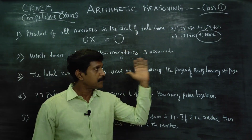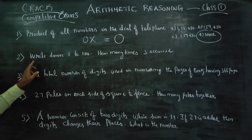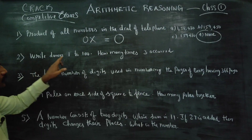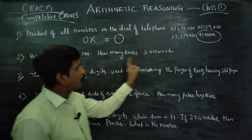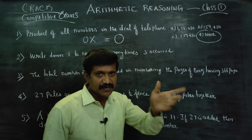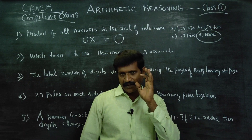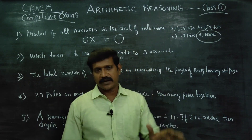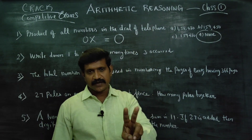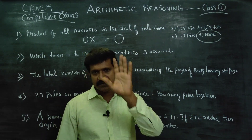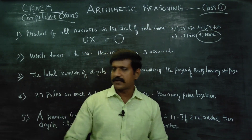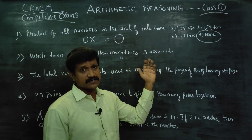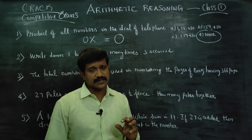Coming to the second sum: write down 1 to 100 — how many times does 3 occur? 3, 4, 5, 6, 7, 8, 9, 10.